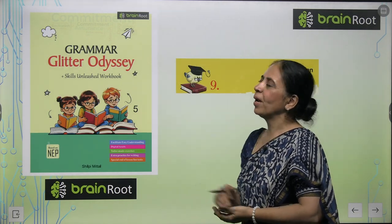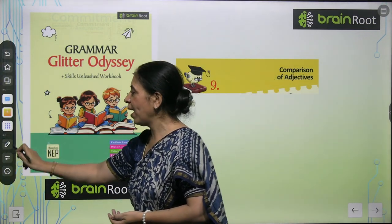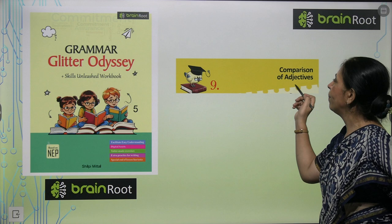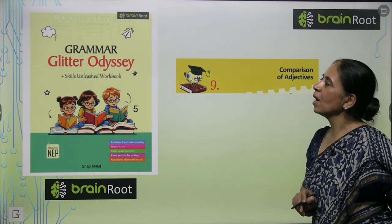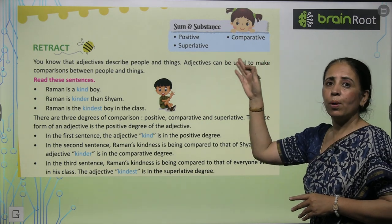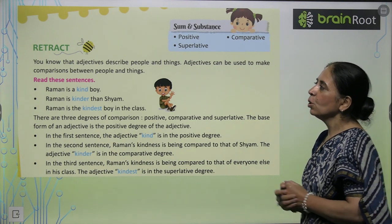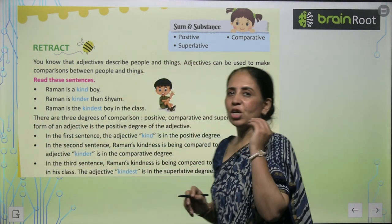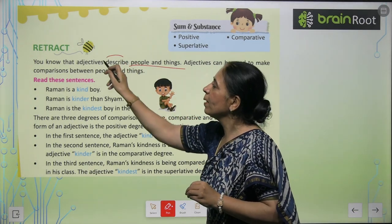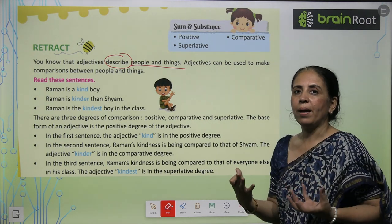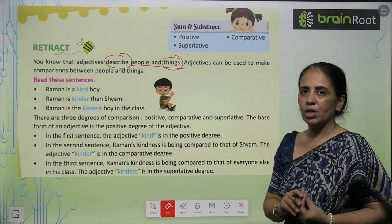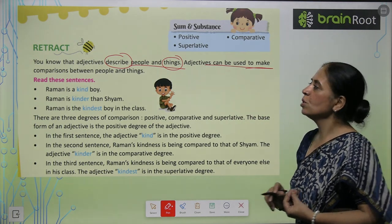Hello my lovely children, welcome to Brain Root Grammar Glitter Odyssey for Grade 5. We are going to start with a new chapter — Chapter 9: Comparison of Adjectives. In this chapter, we'll talk about positive, comparative, and superlative adjectives. Adjectives are used to describe any person or thing — like tall man, small girl, big tree.